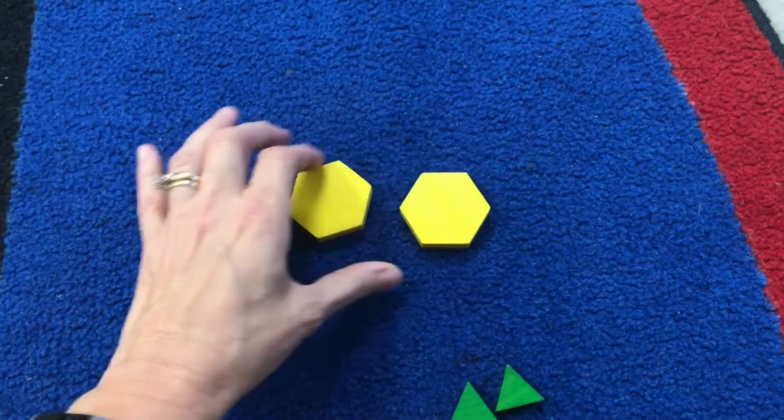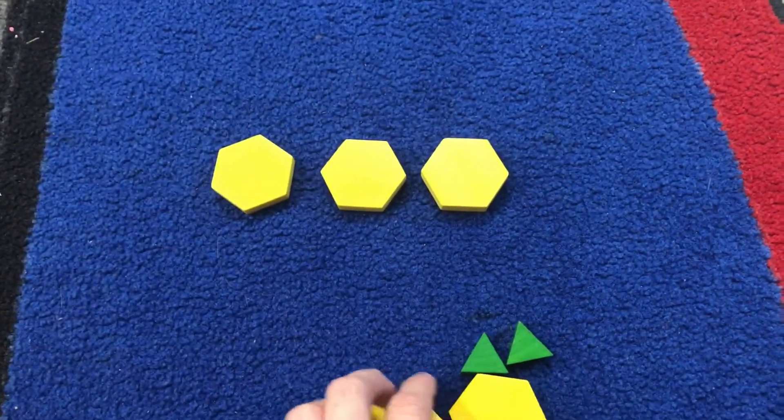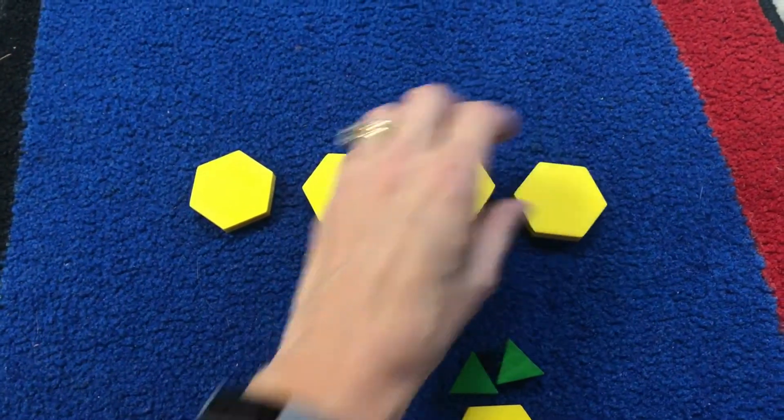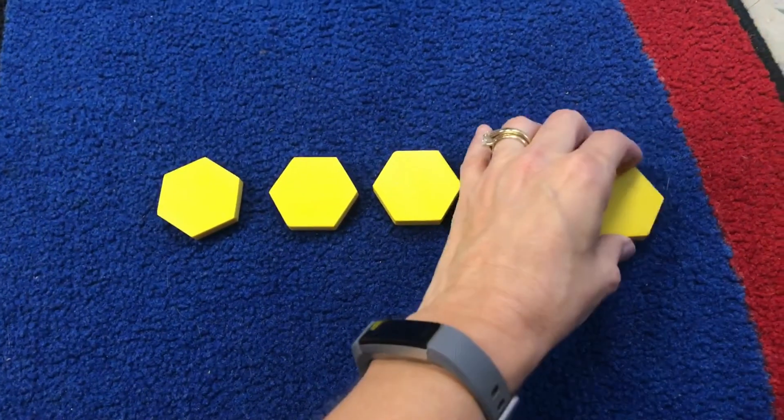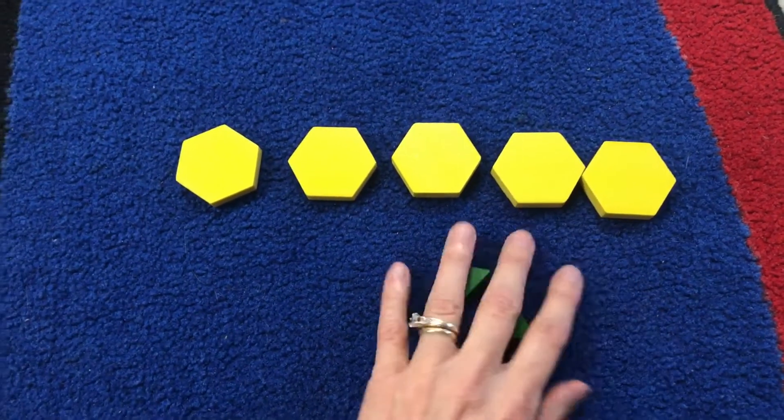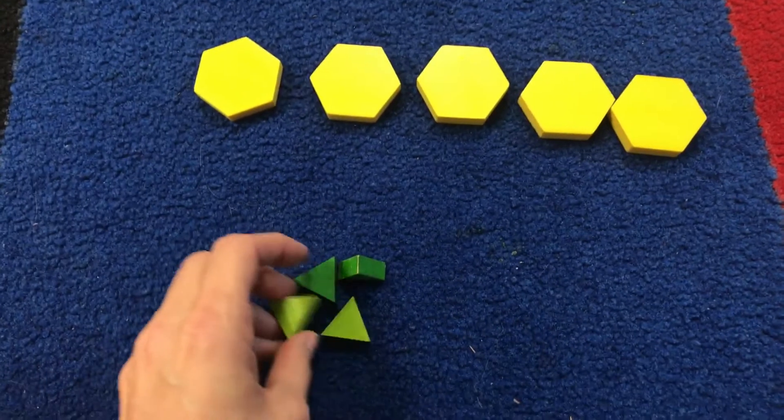While you're waiting for me to do that, you can think about the names of these shapes. What are these shapes called? That's right, hexagon, and then down here I have triangles.